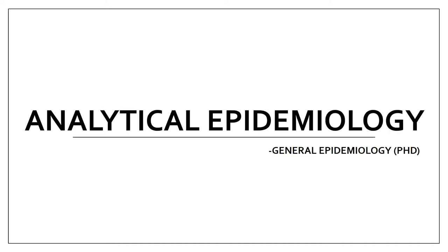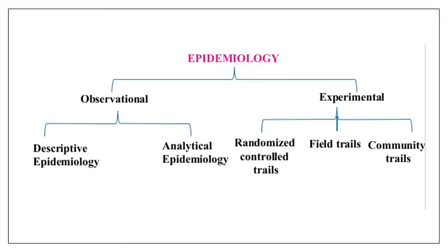Hello everyone. Moving on towards the next epidemiological study — analytical epidemiology from general epidemiology. In the last video we saw the classification of epidemiological studies: observational and experimental. In observational, there are two types: descriptive and analytical. We have already seen descriptive in the last video, and now we'll see analytical epidemiology in depth in this video.